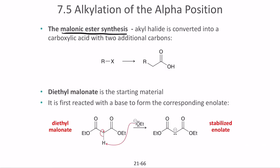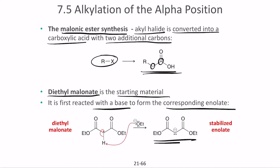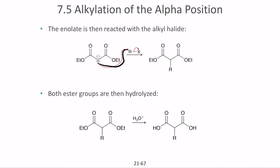Malonic ester synthesis converts an alkyl halide into a carboxylic acid with two additional carbons. The most common starting material is diethyl malonate. First, it is reacted with a base to form the corresponding enolate. The enolate then reacts with an alkyl halide to create an intermediate structure, which is subsequently hydrolyzed to give the carboxylic acid.